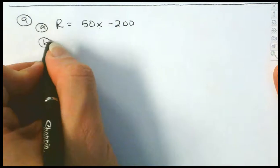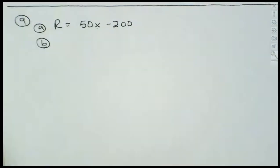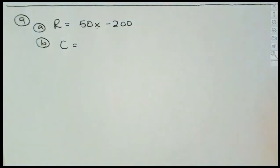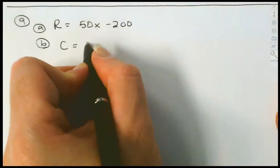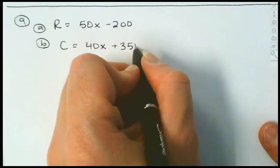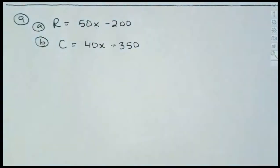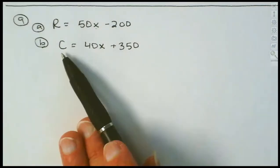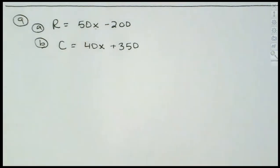Part B asks for the cost expression. Production costs are $350 plus $40 per appliance. So cost is 40x + 350. The $350 might be rent or overhead — it's a fixed added cost. The more appliances we produce, the more cost and the more revenue we get.